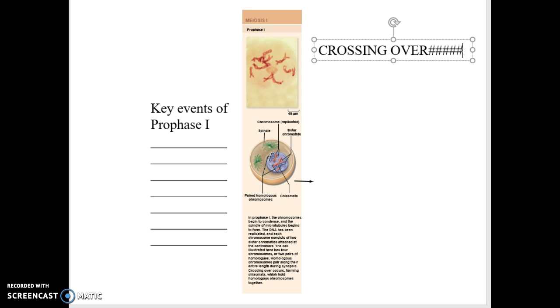Crossing over occurs during prophase 1. This is going to be the mixing up of genetic material in the individual as they form sperm or eggs.